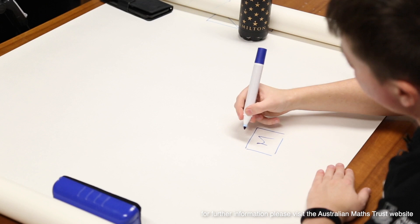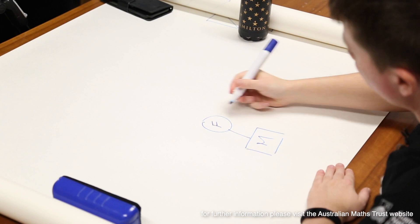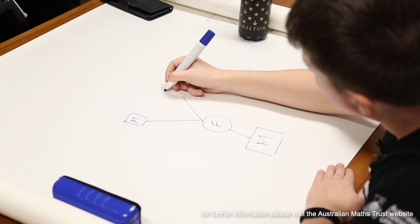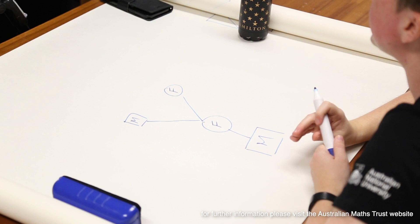We should start at a male bee, and one generation back his parent is a female bee. Going back a generation again, we have a male bee and a female bee. I want you to try continuing this back for seven generations and see if you can spot any patterns. Now pause the video and have a go at doing part one yourselves.